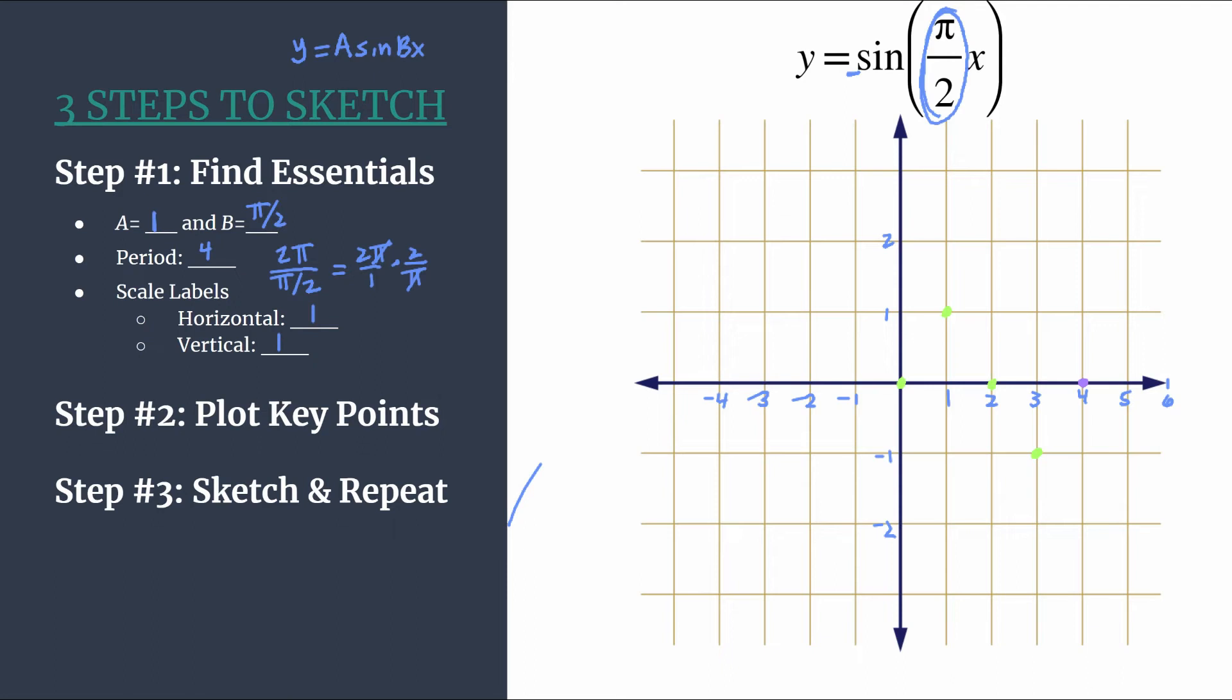Let's go ahead and sketch this in. You can see we really do a lot of the tough work, or we do the bulk of the work in step one, and then as long as you know the pattern for step two and you know how to sketch and duplicate the pattern, steps two and three really fall into place nicely. So we draw our sine curve here. We've got a nice sketch of one cycle of sine of pi over two x.